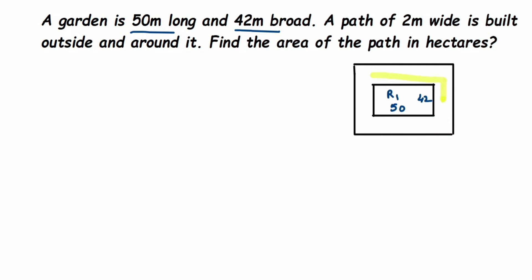Now we have to find out the area of the path. To find this area, we're going to find the area of the bigger rectangle and the area of the smaller rectangle. For the inner rectangle, length and breadth are given, but for the outer rectangle we need to figure it out. Since the path is 2 meters wide, it's simple.